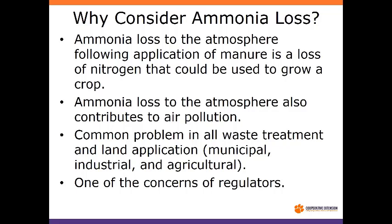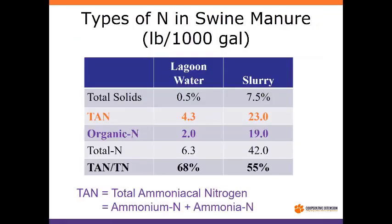And it's not just with ag — it's also with municipal waste treatment, industrial application of sludges, things like that. It's a big concern of regulators in our state and across the country. I'm going to focus on swine manure, and just as a caveat, the numbers really only apply to swine manure. The solids content makes a difference, and the species also makes a difference. Poultry and dairy are definitely different.